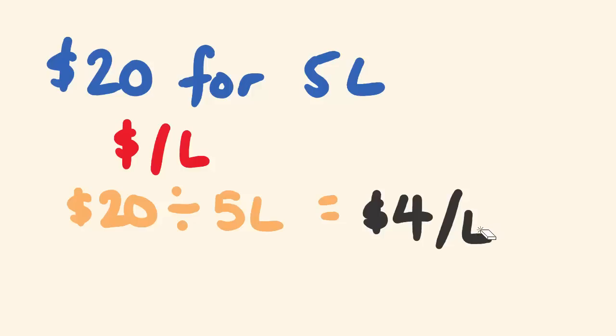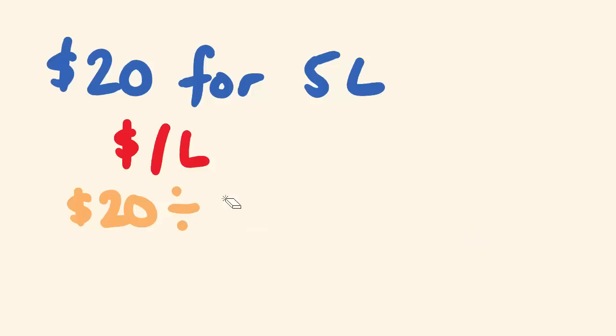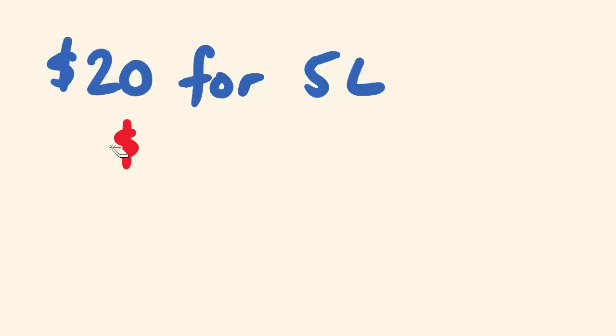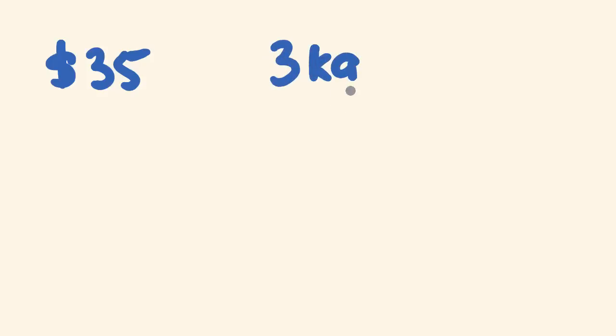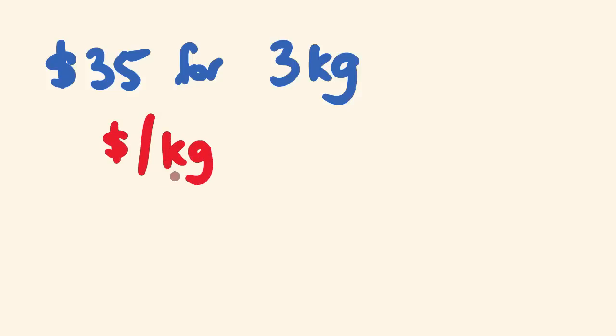There are a couple of little tricks to these and I'll show you these as we go along, but you just follow the formula you've been given. You do it in that order and you can't go wrong. So what about another one of these? I'll just give you a nice easy one to start off with. Say we had something which cost $35 and there was 3 kilos of it — $35 for 3 kilos — and I wanted to know the price per kilo.